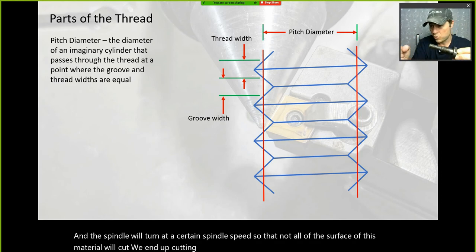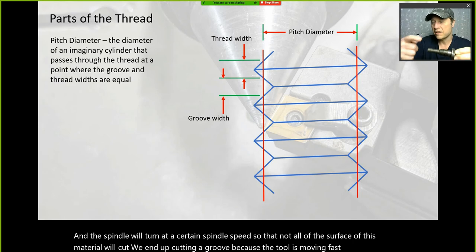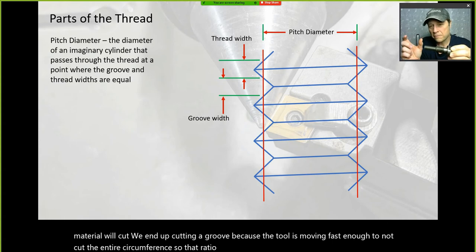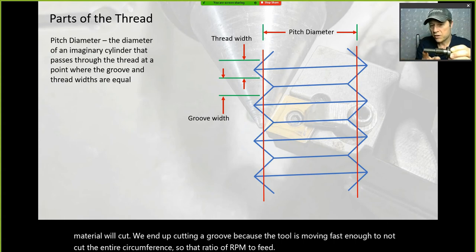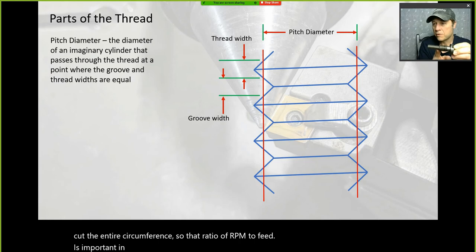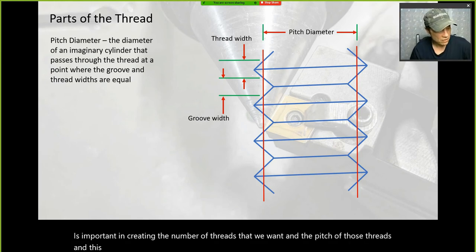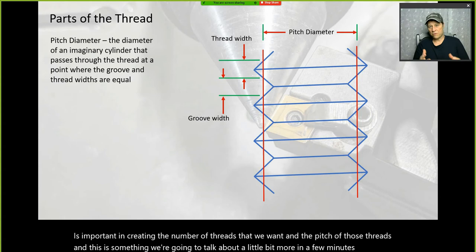That ratio of RPM to feed is important in creating the number of threads we want and the pitch of those threads. The pitch is important to understand.